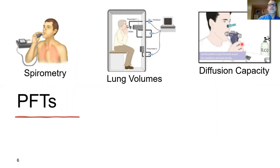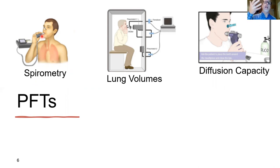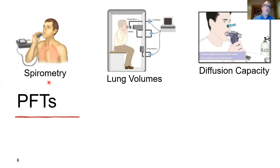To assess severity and follow progression on or off treatment, we use the pulmonary function lab. There are three characteristic tests frequently done. The most common is spirometry, often done in a physician's office. The patient breathes through a mouthpiece with a nose clip in place, takes in as deep a breath as possible, then blows out as hard and fast as possible until the lungs are completely emptied. This test measures the degree of airway obstruction and can detect disorders such as asthma, COPD, or bronchiectasis.